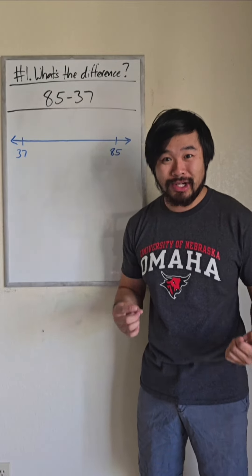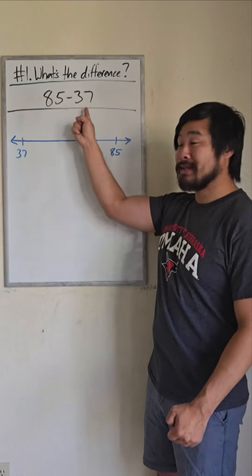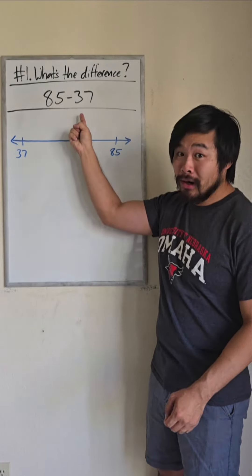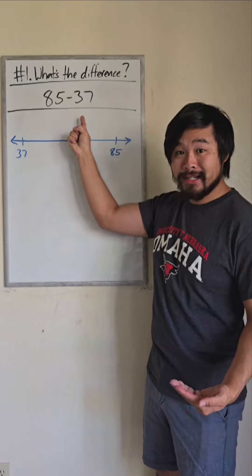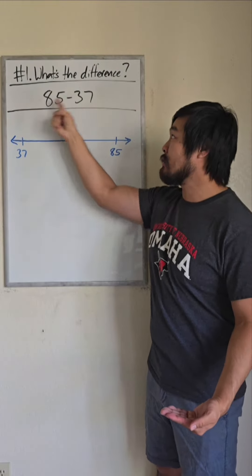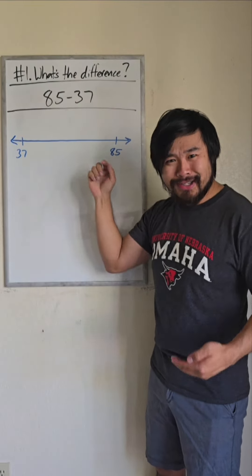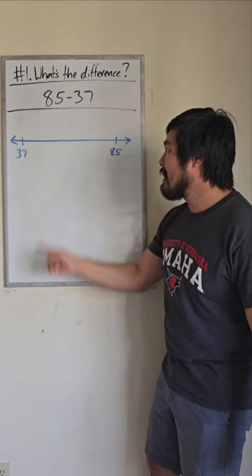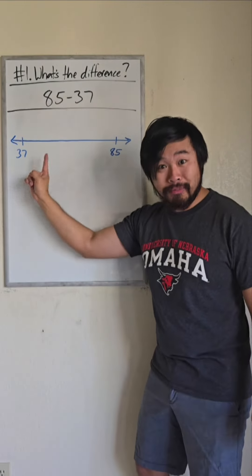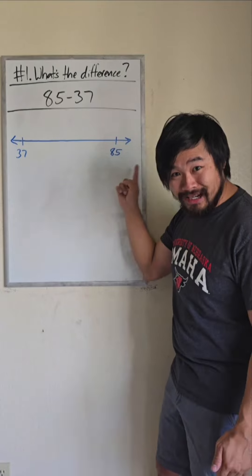Direction matters. So if we're starting at the second number, called the subtrahend, how can I get to the first number, called the minuend? How would you get from 37 to 85?